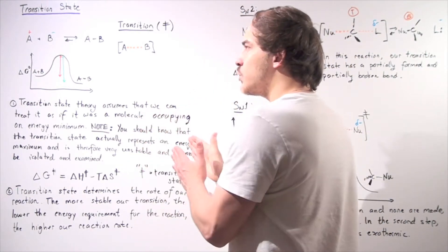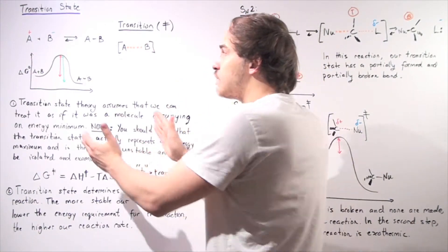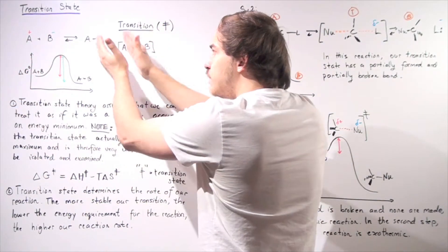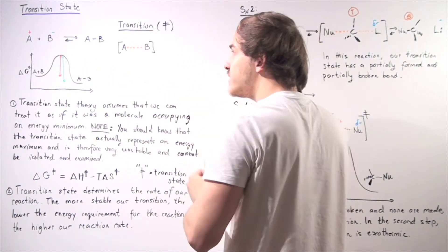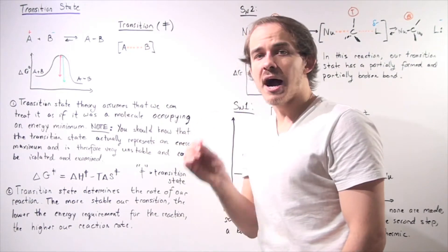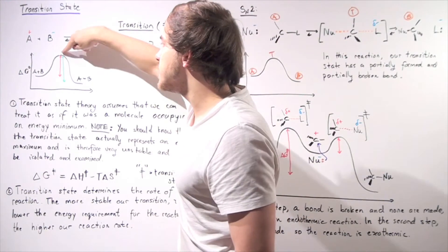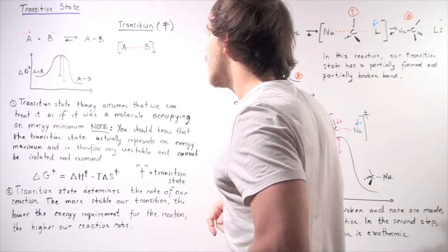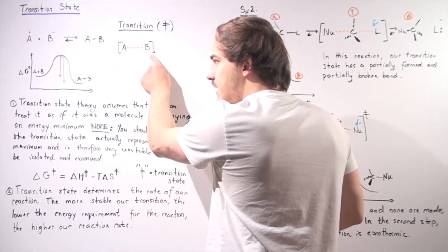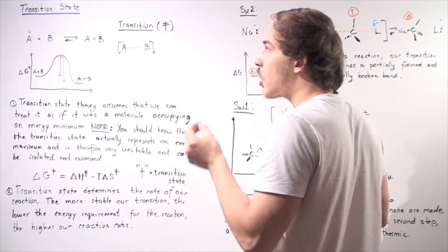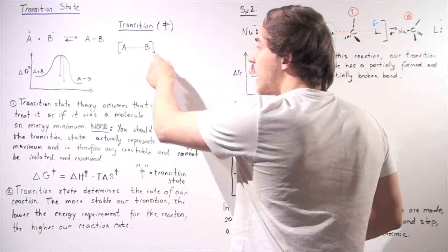What's actually happening between reactants A and B in the transition state? If we go from no bond to a fully formed bond, that means in the transition state — in the middle — we're going to have a partially formed bond. So our transition state will have a partially formed bond between A and B, with a partial positive charge on A and a partial negative charge on B.